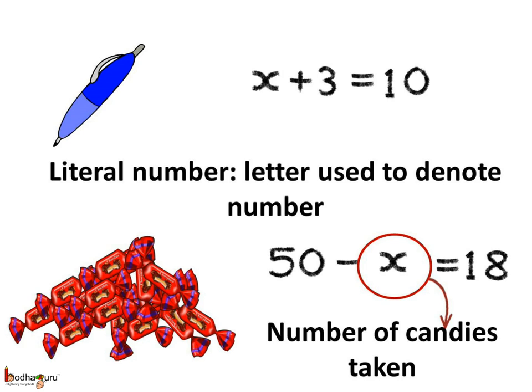Say x represents the cost of the pen. So the cost of the pen, which is x, plus 3 is equal to 10. Same way, let's use the letter x to denote the number of candies taken away. So 50 minus x is equal to 18.